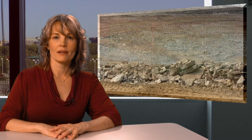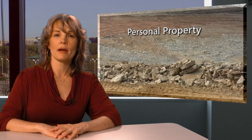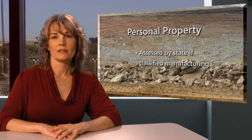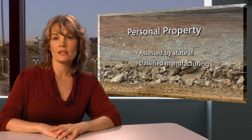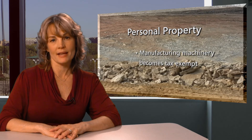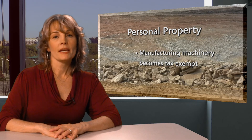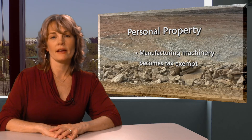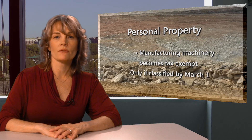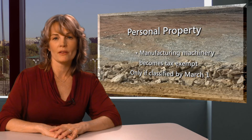Now onto personal property. Personal property used by a frac sand business is assessed by the State once the business is classified as manufacturing. With this manufacturing distinction, much of the machinery and equipment used in the processing of sands is exempt from taxation. It is important to note that the Department of Revenue cannot retroactively classify a company as manufacturing. If the business is not classified by March 1 of the assessment year, the personal property is assessed at full value by the local assessor.